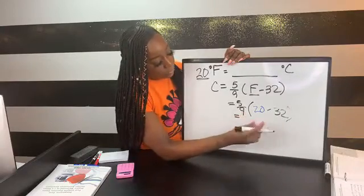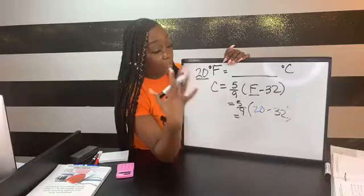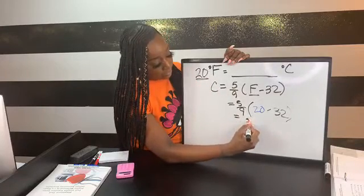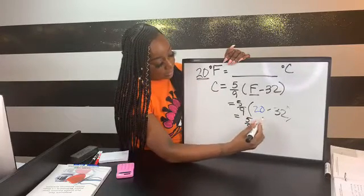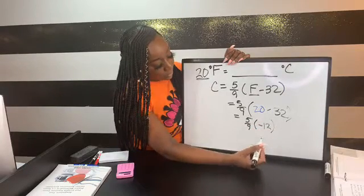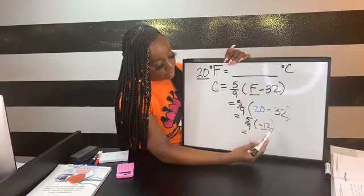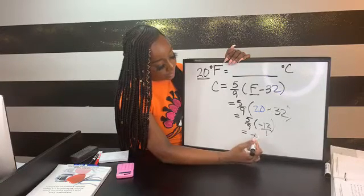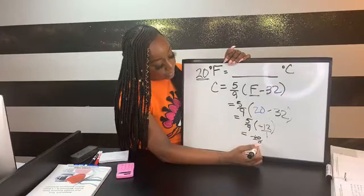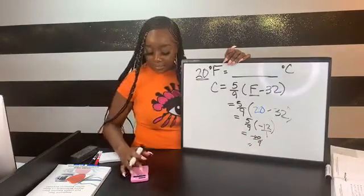We're going to say minus 32. Now we're just going to solve. You always do the parentheses first because you always want to make sure you go with your order of operations. We know that 20 minus 32 gives us negative 12. Then I just do five-ninths times negative 12, so I put 12 over 1. I can do 5 and 12, which is 60, 9 and 1, which is 9. If I do 60 divided by 9, that gives me negative 6.7 degrees Celsius.